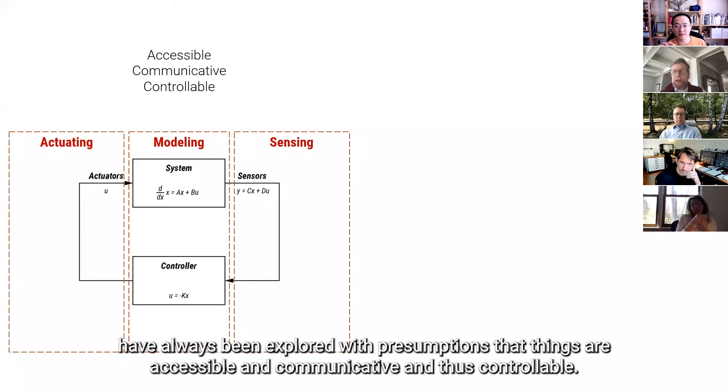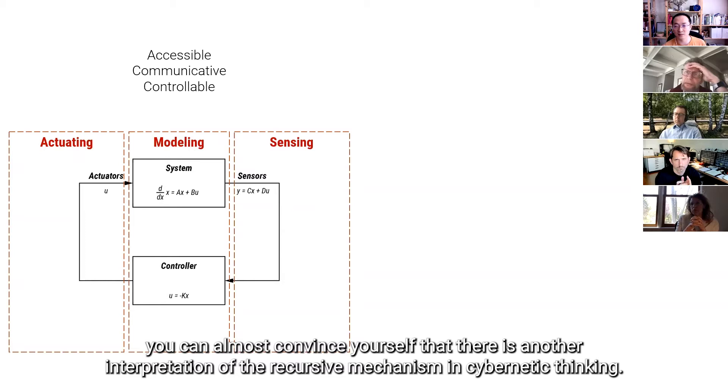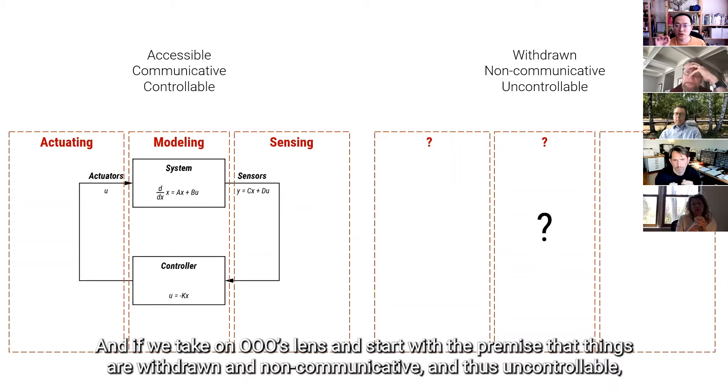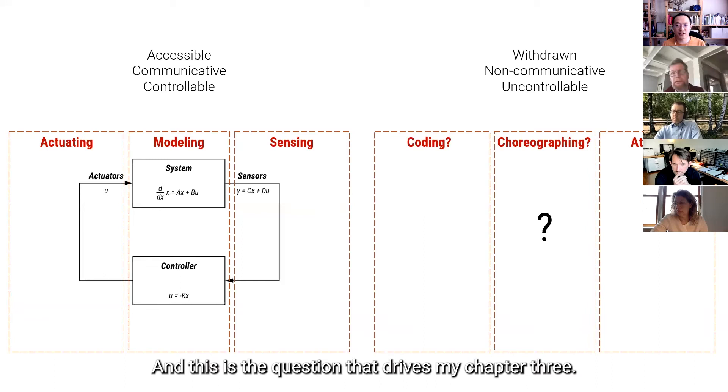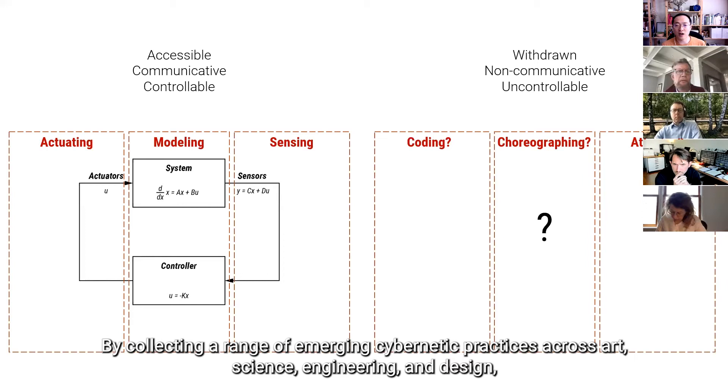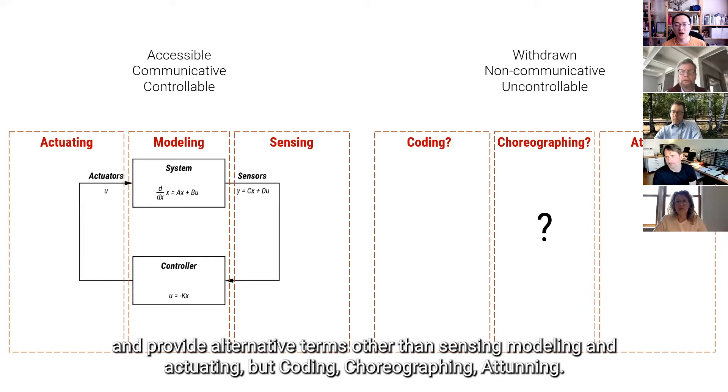So, in other words, the feedback loop and recursive processes have always been explored with a premise that things are accessible and they are communicative and thus controllable. But in Sugwen's case, you can almost convince yourself that there is another interpretation of this recursive mechanism in cybernetic thinking. And if we take on a Triple O's lens more seriously and start with a premise that things are withdrawn and non-communicative and thus uncontrollable, then what does cybernetic even mean in this context? And this is exactly the question that drives my chapter three. And by collecting a range of emerging cybernetic practices across art, science and engineering and design, I'm trying to map out an alternative way to understand cybernetic thinking about uncontrollability and non-communication and provide alternative terms other than sensing, modeling and actuating, but coding, choreographing and attuning.